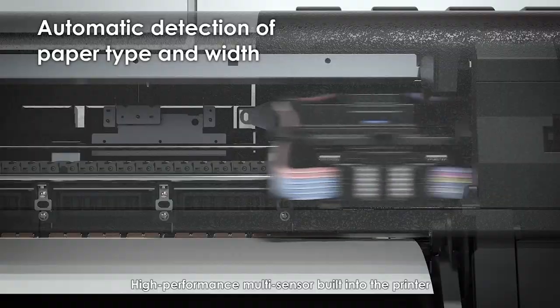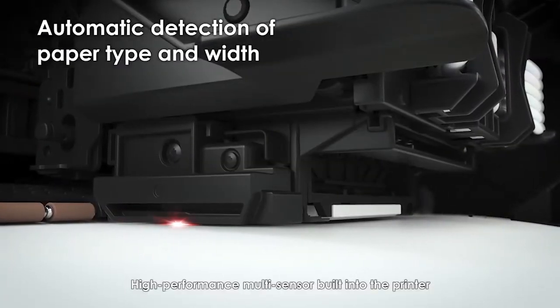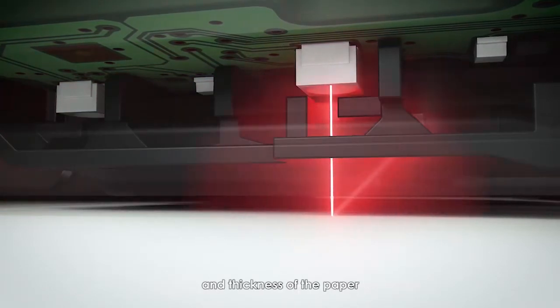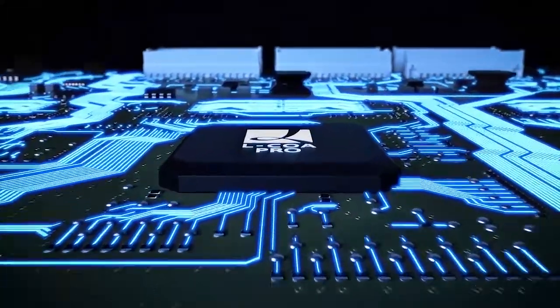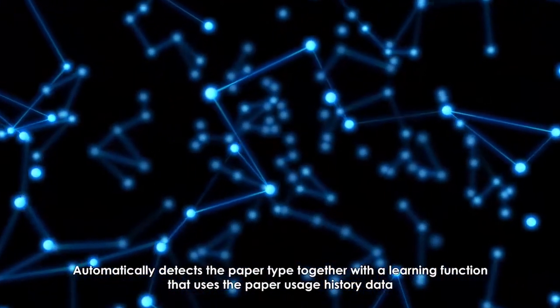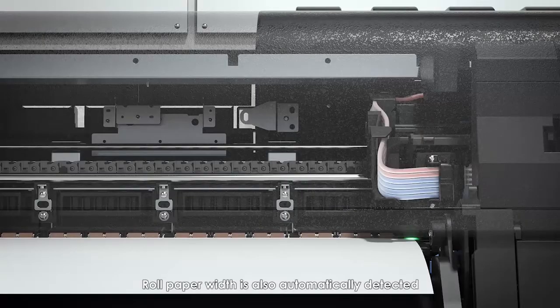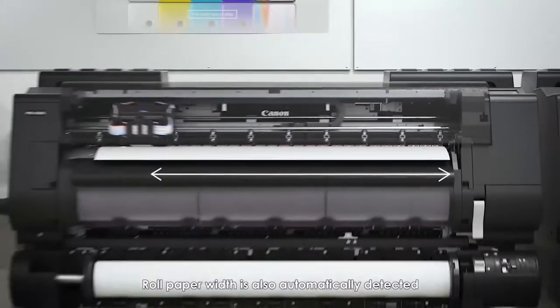High-performance multi-sensor built into the printer. It accurately measures the surface reflectivity and thickness of the paper. Automatically detects the paper type together with a learning function that uses the paper usage history data. Roll paper width is also automatically detected.